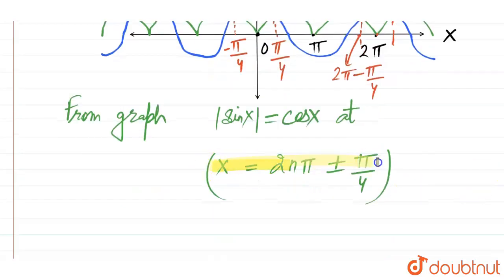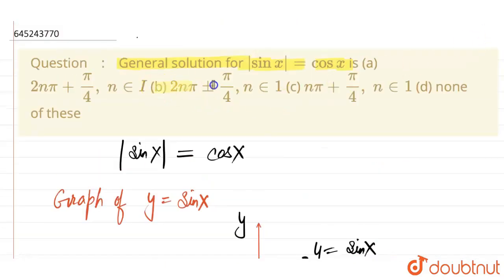x equal to 2nπ plus minus π by 4. The correct option is option number b. Thank you.